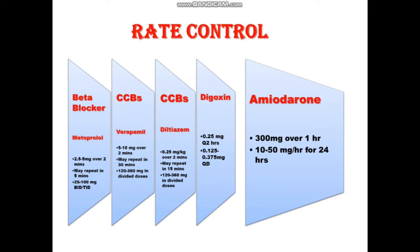When we are unable to control heart rate with beta blockers, calcium channel blockers, or digoxin, we use amiodarone. Amiodarone is an antiarrhythmic drug but can also be used for rate control. The loading dose is 300 mg in an infusion over 1 hour, and the maintenance dose is 1 mg per kg per hour — approximately 10 to 50 mg per hour — for 24 hours. To summarize: prefer beta blocker for coronary artery disease, calcium channel blockers for COPD, digoxin for congestive cardiac failure, and amiodarone as a last resort.